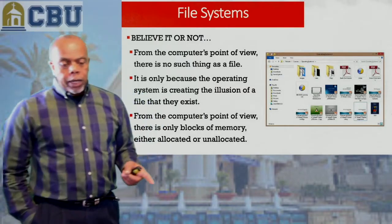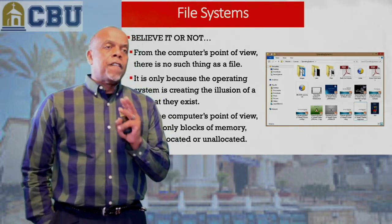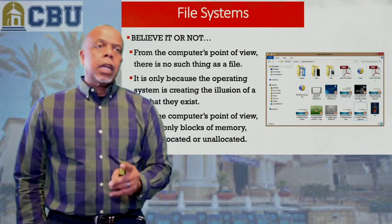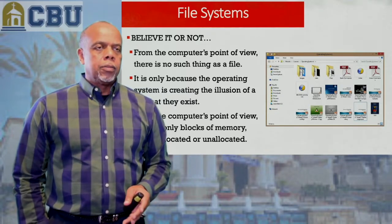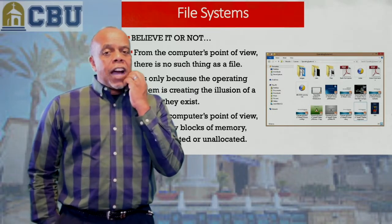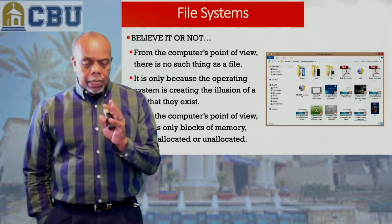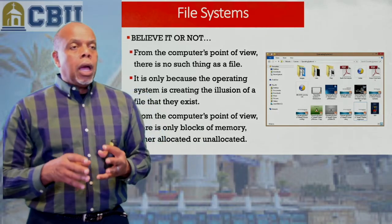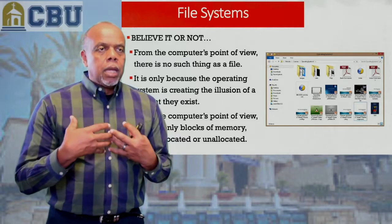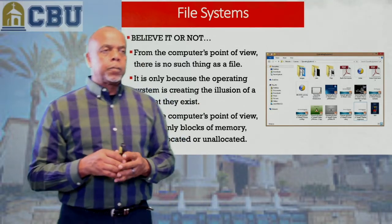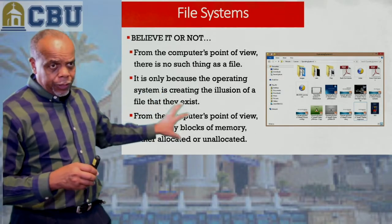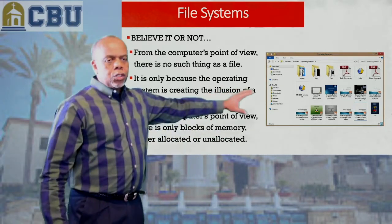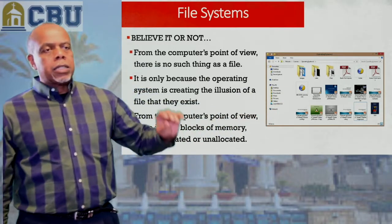Now let's talk about the file system. Believe it or not, your computer could care less about a file system. A file doesn't exist for a computer — the only thing that exists for a computer is a series of ones and zeros, binary numbers, software code. That file structure is there for us as humans to be able to know how to relate to and find information. Your operating system creates an illusion that this file structure exists, but it's just there so that we as humans have a visual way to interact and find information on our hard drive.